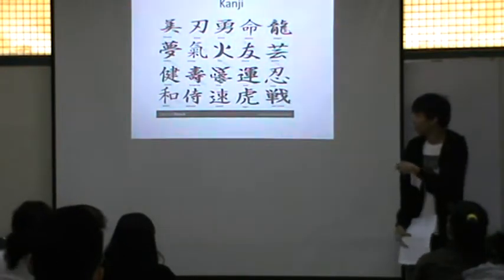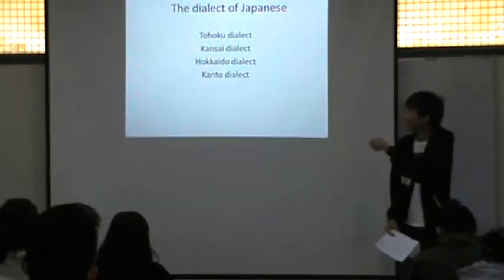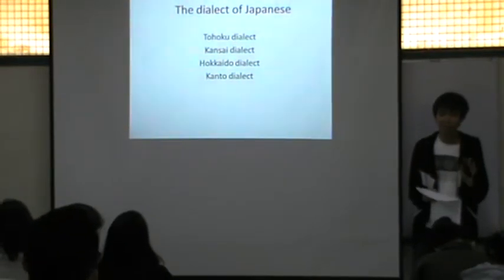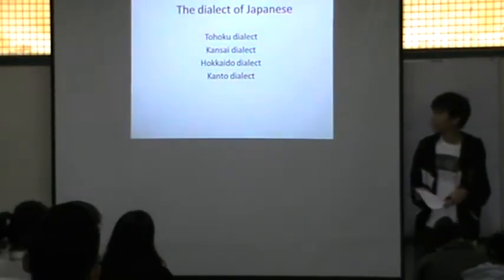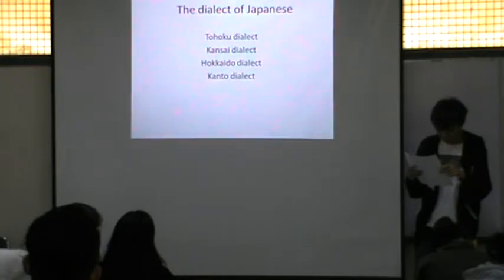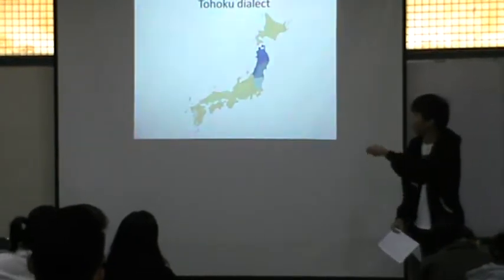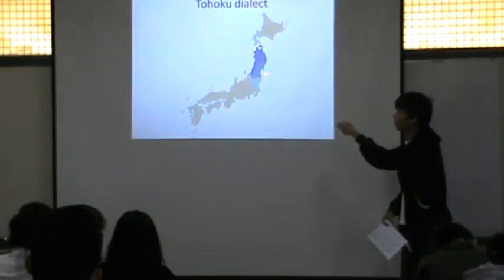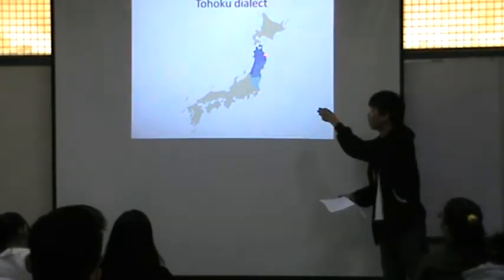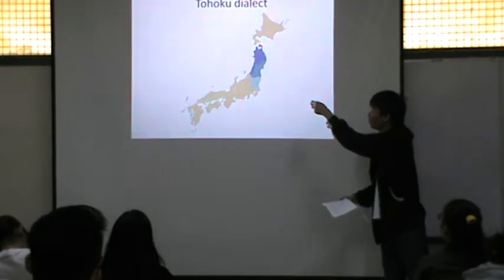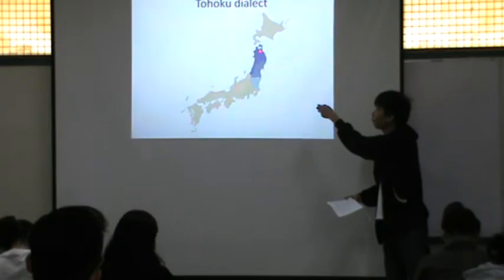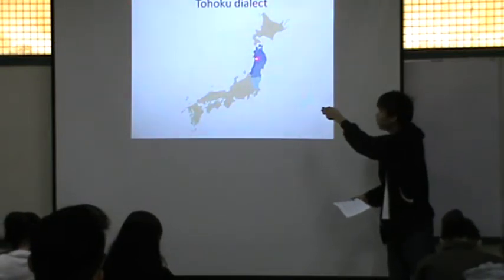Next I will be talking about the dialects of Japanese. The Japanese have four major dialects. Firstly, it is the Tohoku dialect. As you can see in this picture, the Tohoku dialect is mostly spoken by Japanese people in this area, which is the blue area in this picture, mostly in the Aomori prefecture, Akita prefecture, and Miyagi prefecture.